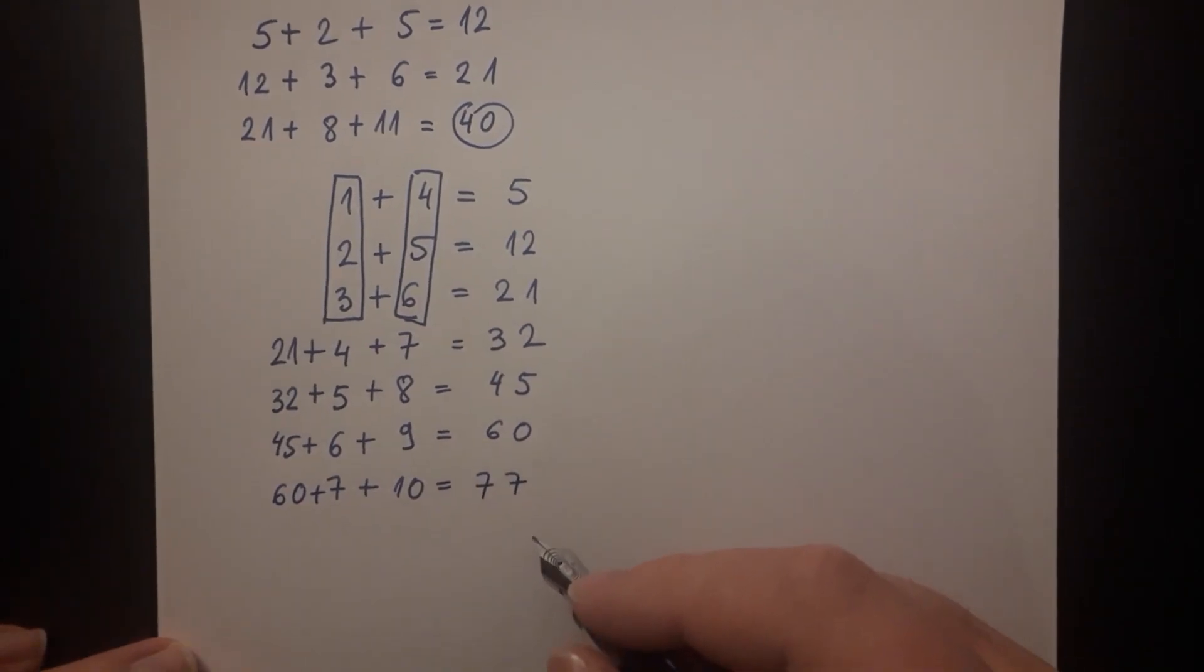And by continuing this pattern, we finally get 8 plus 11. And when we add the previous result of 77 to 8 plus 11, we get the result of 96.